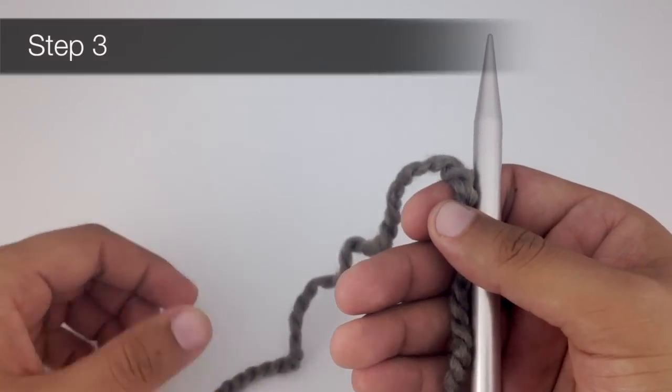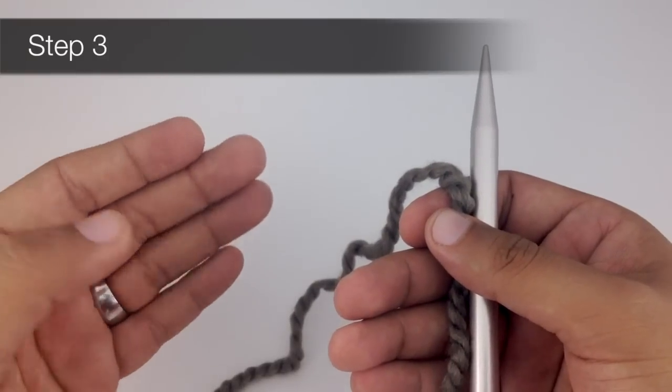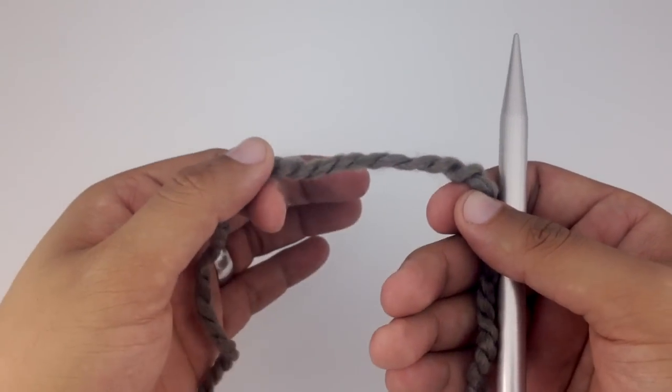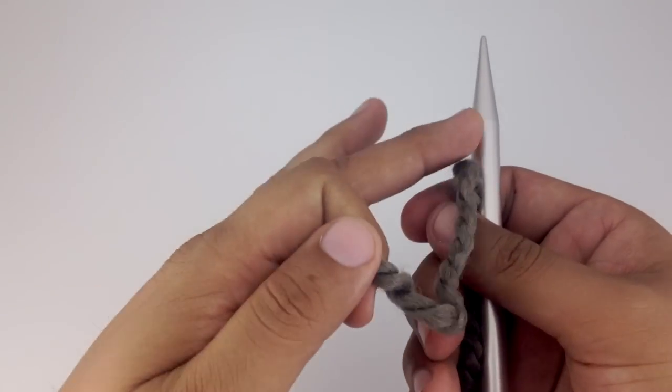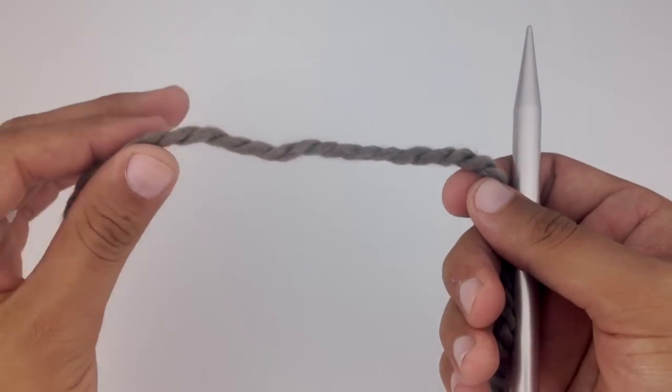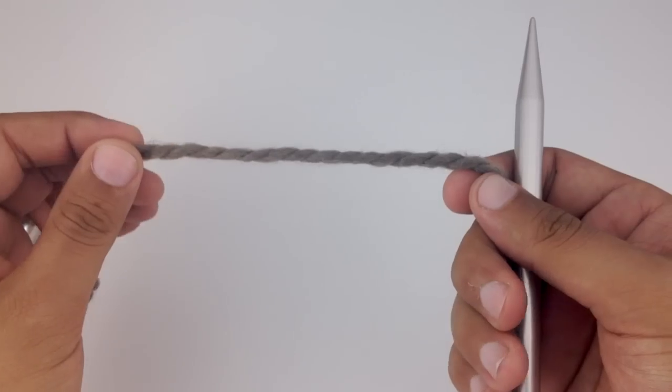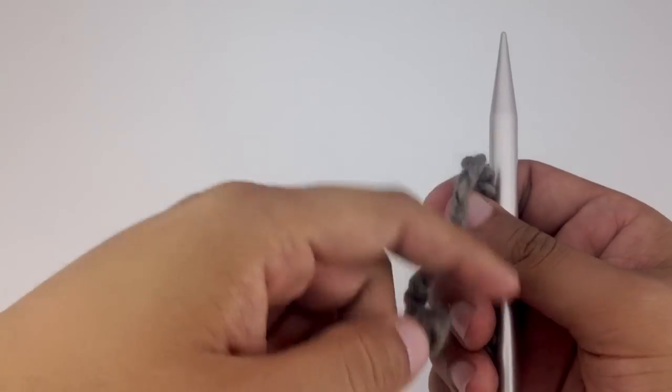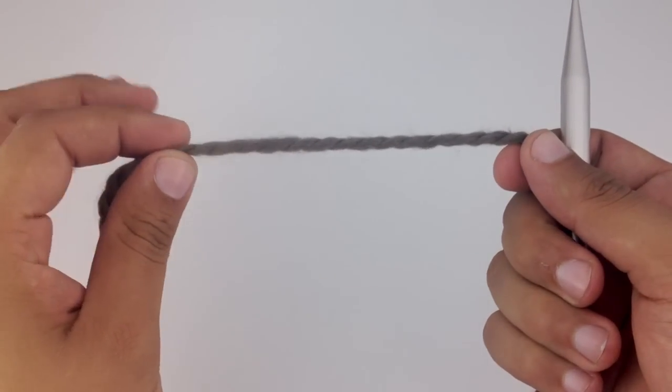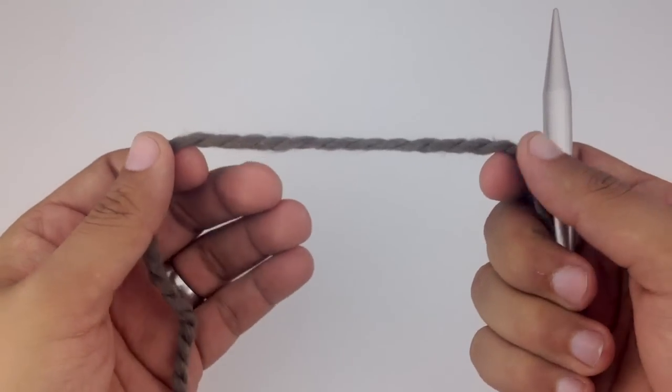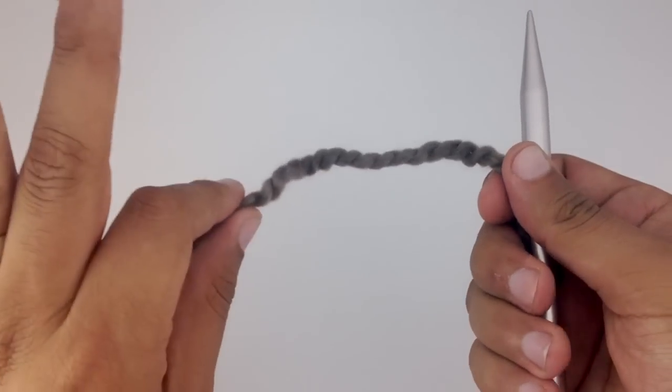For step three, we're going to take our non-dominant hand, grab the working yarn, and pull it away from our knitting needle perpendicular. So we'll have the knitting needle going this way and the yarn going this way, and we just want to stretch out a few inches in between the needle and our non-dominant hand.